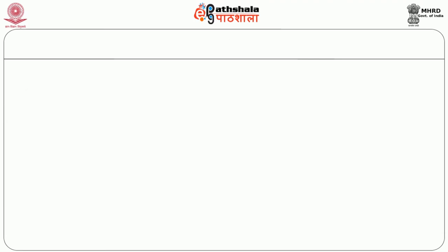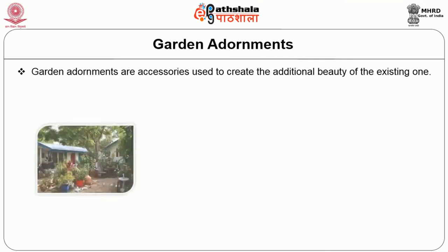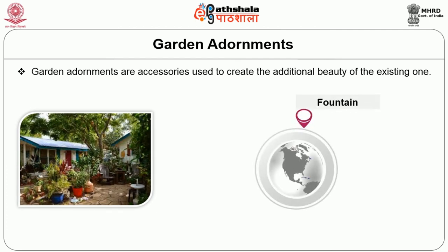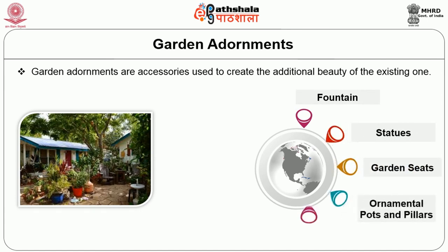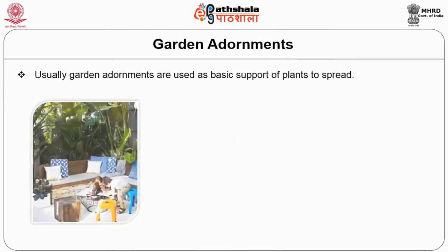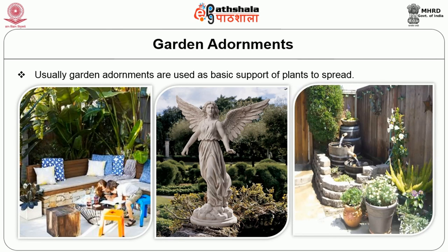We will see about garden adornments. Garden adornments are accessories used to create additional beauty of the existing garden. Garden adornments are non-living elements. Garden adornments listed below: fountains, statues, garden seats, ornamental pots and pillars, arches and pergolas, trellises, hanging baskets, tubs, vases and urns. Usually garden adornments are used as basic support to plants to spread. Some adornments are useful for people to sit, relax and sleep, e.g. seats and benches. Attractive statues are used to create trophy in the garden. Fountains bring a natural look to the garden.